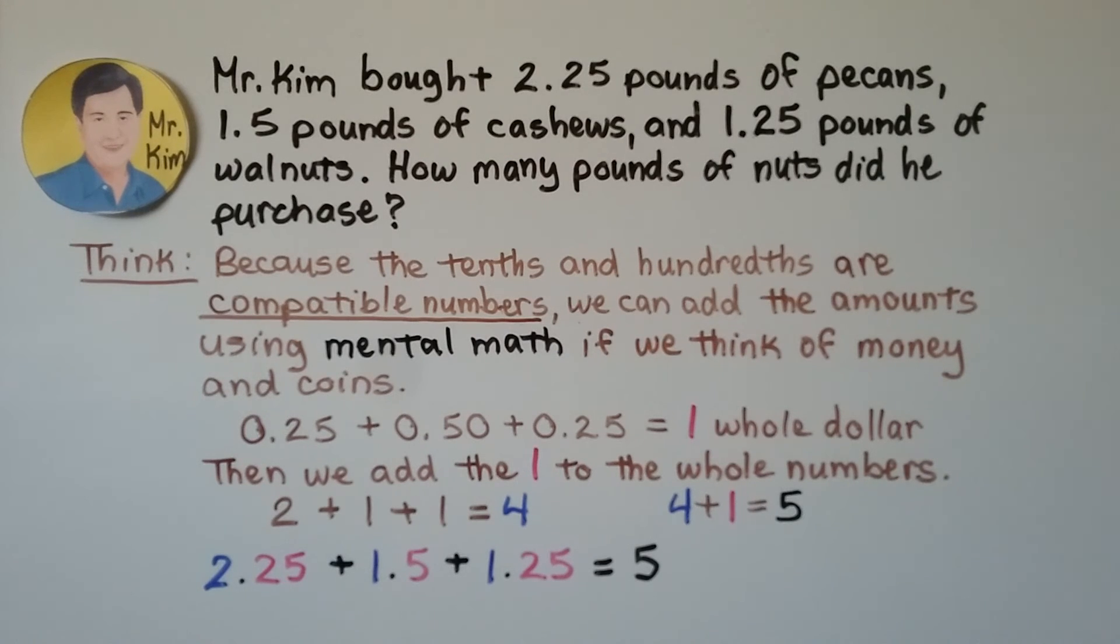Mr. Kim bought 2 and 25 hundredths pounds of pecans, 1 and 5 tenths pounds of cashews, and 1 and 25 hundredths pounds of walnuts. How many pounds of nuts did he purchase?